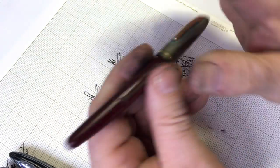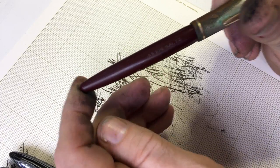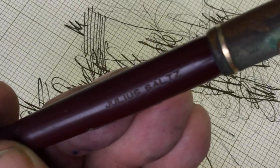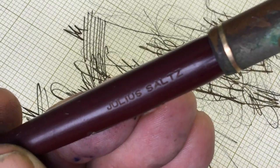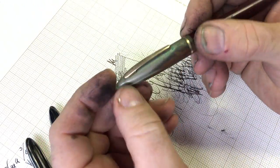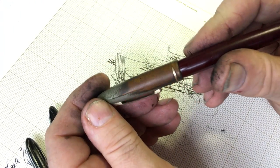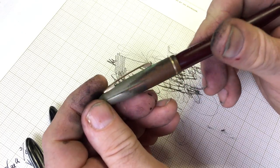This pen was owned by a man named Julius Saltz. I don't know if you can see his name there, Julius Saltz. And Julius used this pen clearly for a very long time.